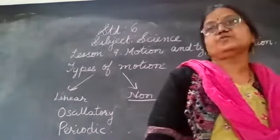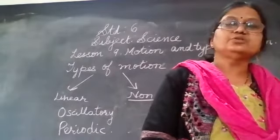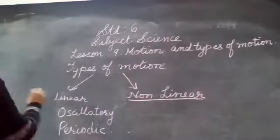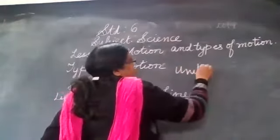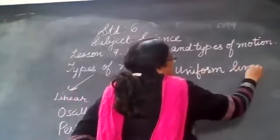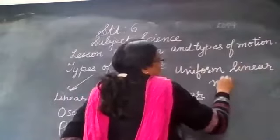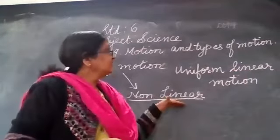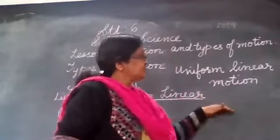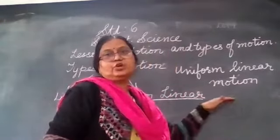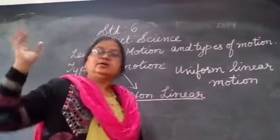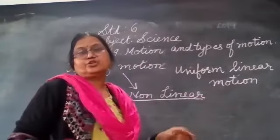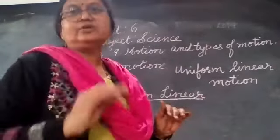Suppose you are seeing the marching of soldiers. Marching of soldiers is the best example of uniform linear motion. Uniform linear motion means when the movement of any object is always in a straight line and the speed remains the same everywhere — it will not change. If you throw a ball from your terrace, it will go a far distance but the speed of that ball will not remain the same everywhere.